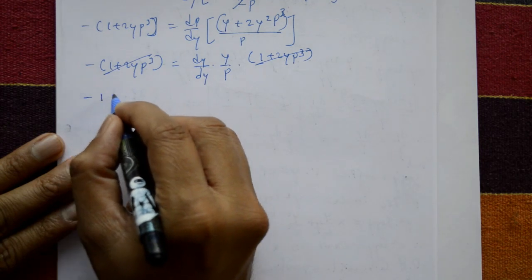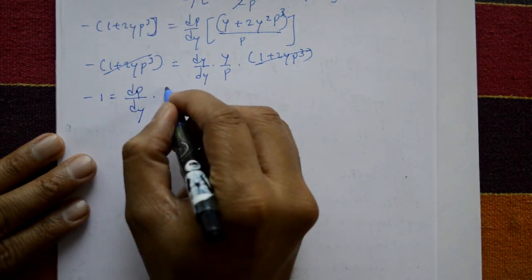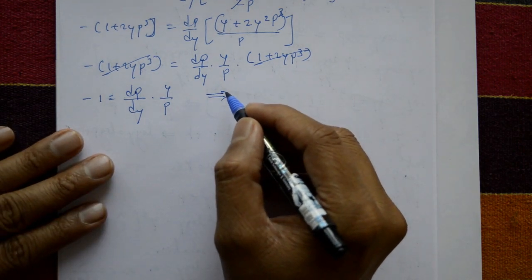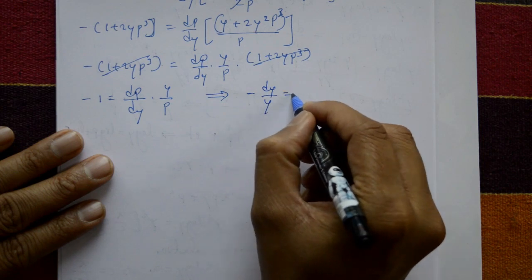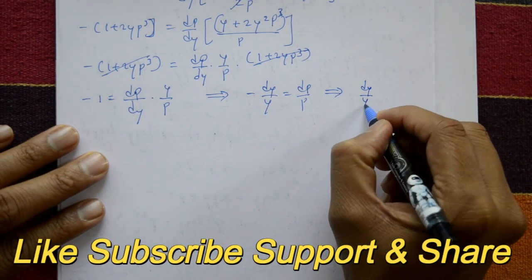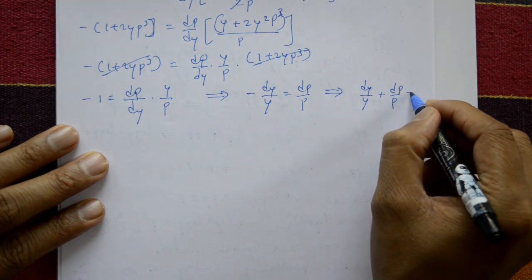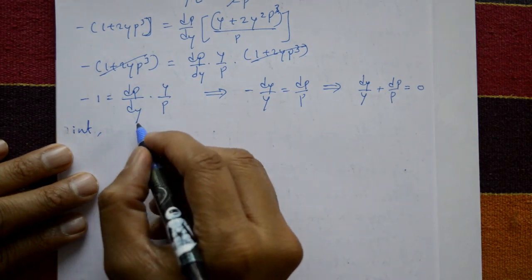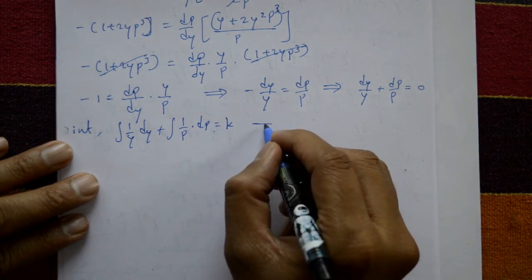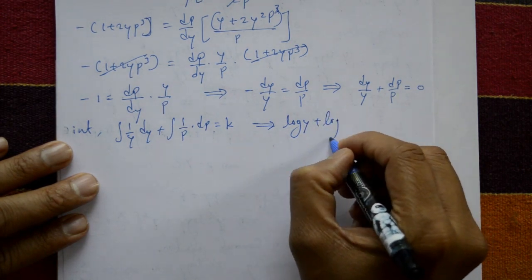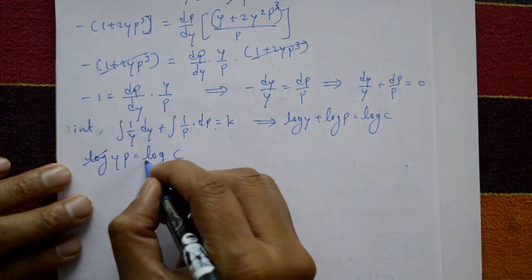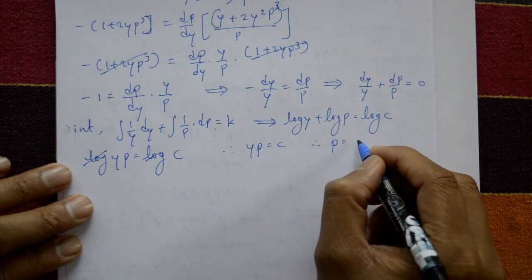After cancellation, we get minus 1 = dp/dy times y/p. Now separate the variables: minus dy/y = dp/p, or equivalently dy/y + dp/p = 0. Integrate both sides: integral of 1/y dy + integral of 1/p dp = k. This gives log y + log p = log c, so log(yp) = log c, therefore yp = c.